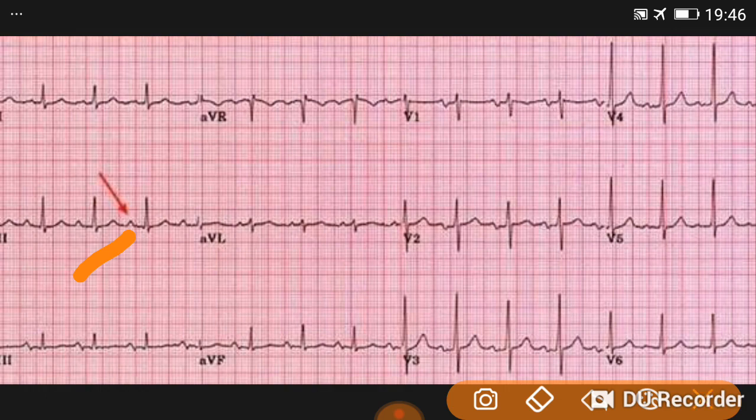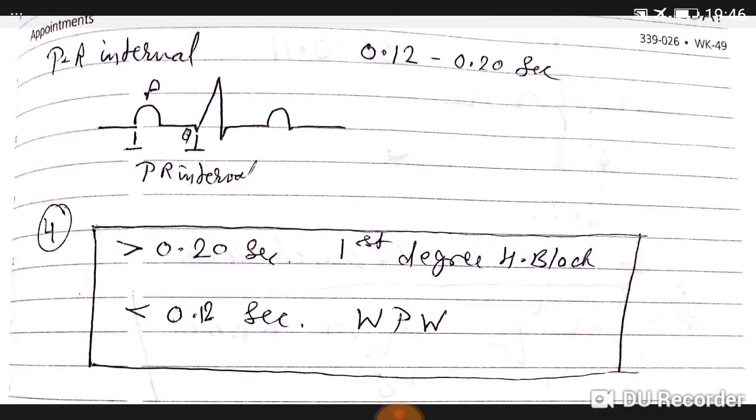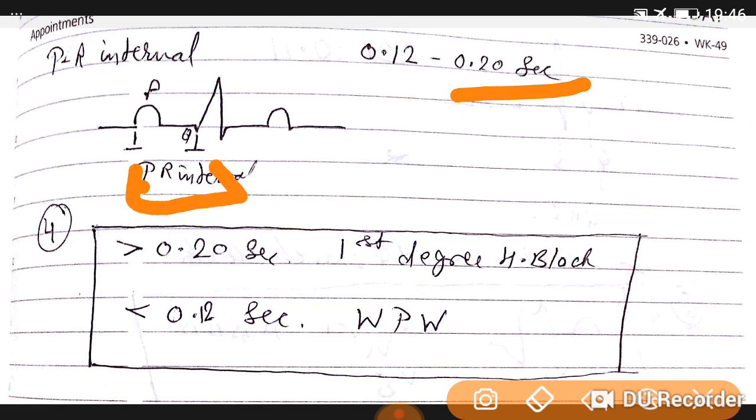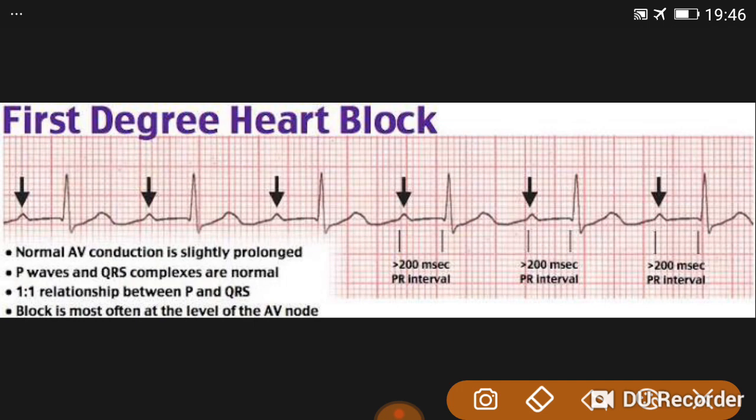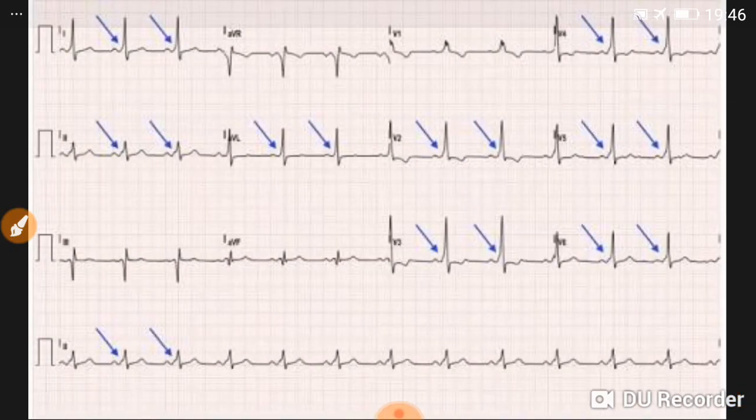This indicates wide P, more than 2.5, so it is left atrial enlargement and P mitrale. Now PR interval: normally 0.12 to 0.20 seconds. When PR interval is more than 0.20 seconds, this is first degree heart block. See, this is PR interval when it is prolonged, P till Q more than 20, it's first degree heart block.